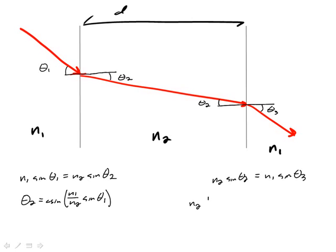n2 and the sine of an arc sine, n1 over n2. Hey look, things are starting to cancel out. Sine theta 1. The n2s are going to cancel out down there, and we know that's n1 sin θ3. And hey, theta 3 is equal to theta 1.